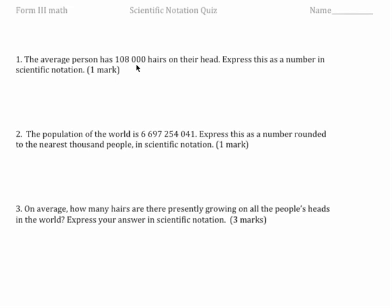So we want to get the decimal point right after that one. So we're going to move the decimal point one, two, three, four, five steps over. So it's going to be 1.08 times ten to the five.